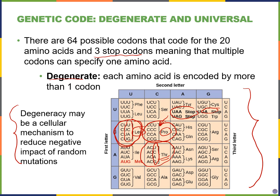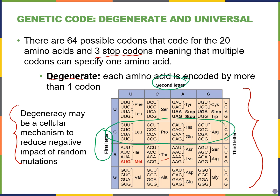Let me look more closely at how to read the codon chart. The left axis gives the first letter, the top axis gives the second letter, and the right axis gives the third letter. So if I want to look up C-U-G: C is in this row, the second letter U is on this axis, and the third letter G is here — so C-U-G encodes the amino acid leucine.